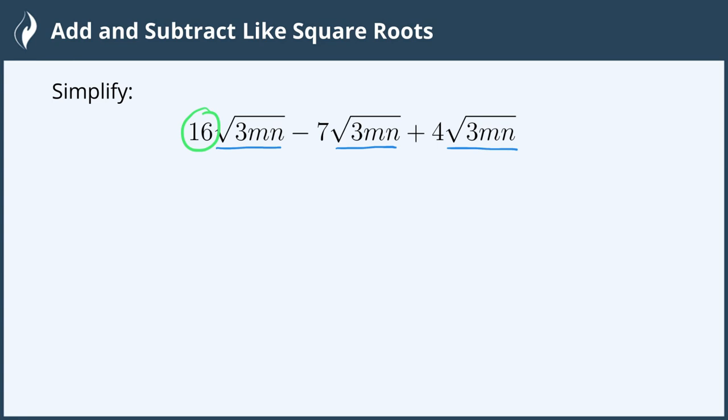So we'll take 16, subtract 7, which gives us 9, and add 4, which gives us 13. And the variable makeup, or the radical makeup, 3mn, is the exact same, and that's our answer. And we're all done.